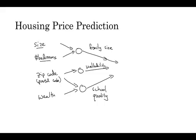And then finally, you might think that, well, the way people decide how much they're willing to pay for a house is they look at the things that really matter to them. In this case, family size, walkability, and school quality, and that helps you predict the price. So in this example, x is all of these four inputs. And y is the price you're trying to predict. And so by stacking together a few of the single neurons or the simple predictors we had from the previous slide, we now have a slightly larger neural network.